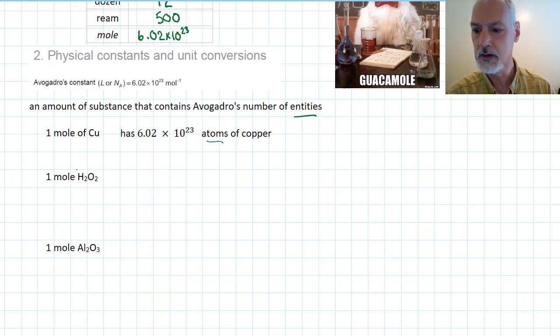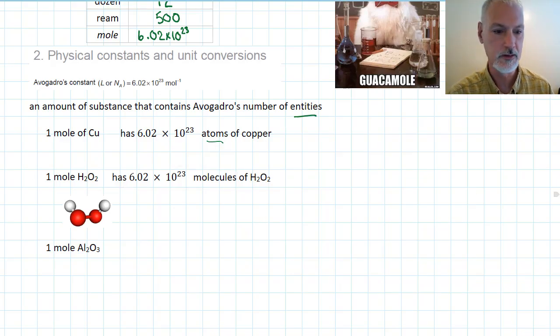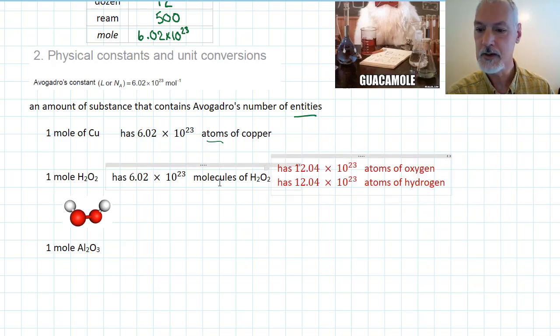Suppose I had one mole of hydrogen peroxide. Hydrogen peroxide is a molecule. So as a result, I would have Avogadro's number of hydrogen peroxide molecules. Now, each of those molecules contains two hydrogen atoms and two oxygen atoms. So if my question had been how many atoms are present in one mole, I need to go a step further. And I would have to double this number as there are two hydrogens present and double it again because of the two oxygens.